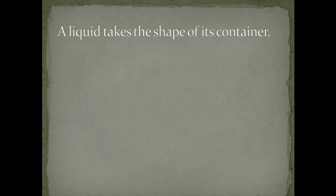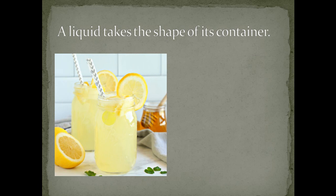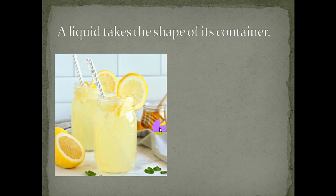Does water have a shape? Of course not — you cannot carry it alone without a container. A container is something in which you put the liquid inside. So a liquid doesn't have shape; a liquid takes the shape of its container. For example, this orange juice is put inside a jar, so it takes the shape of the jar. Like this honey — it also takes the shape of the jar.